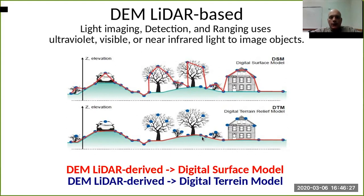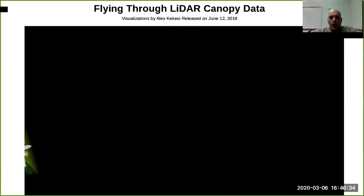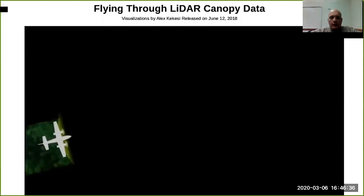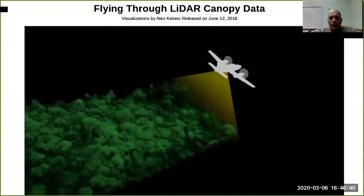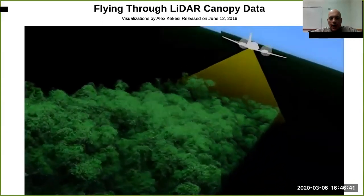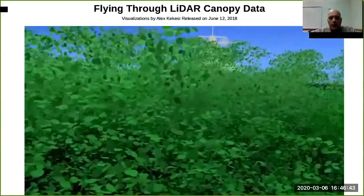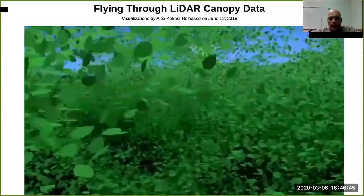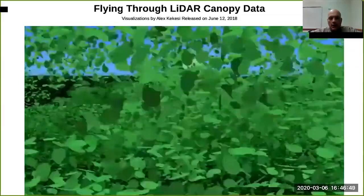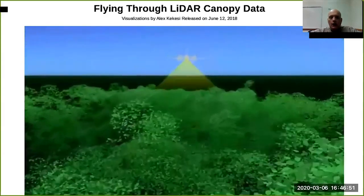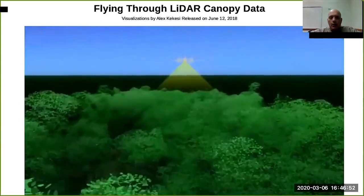How LiDAR works: it is airplane-based, sending pulses of light that can really penetrate through the canopy cover and detect the multi-dimensional space of the canopy. That's why with LiDAR we can have both a surface model and a terrain model.